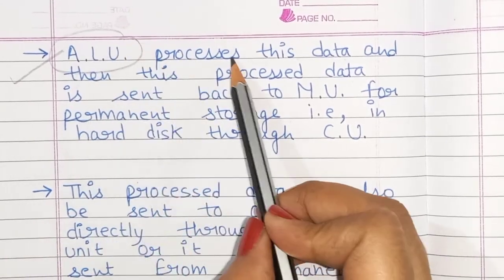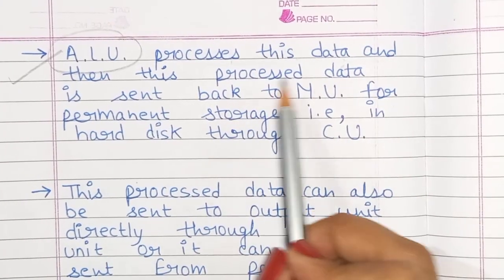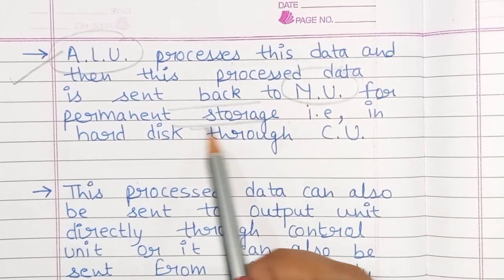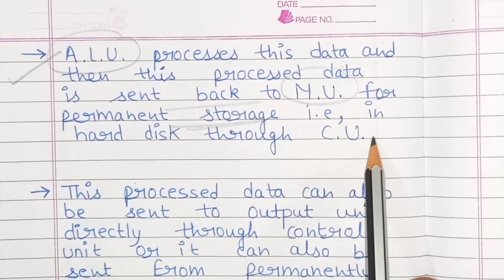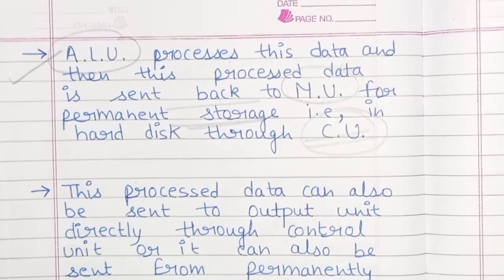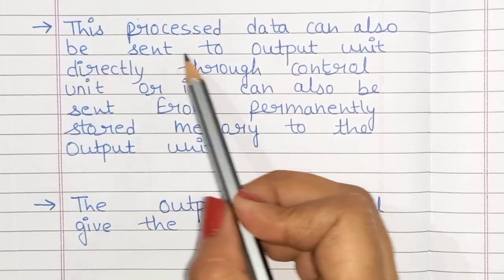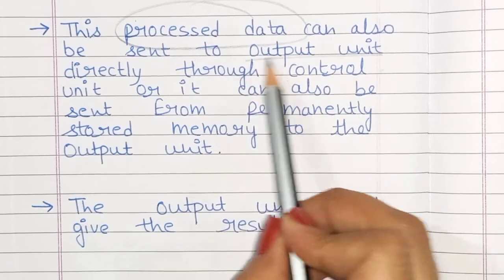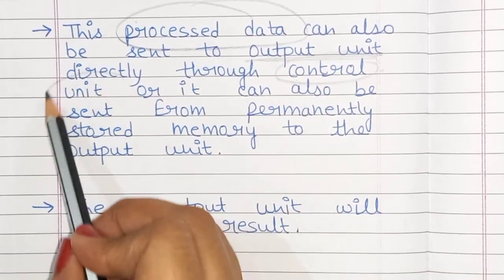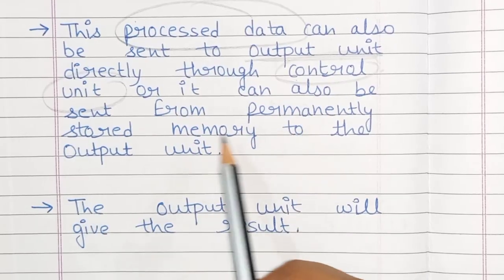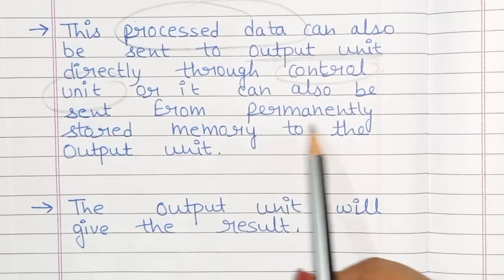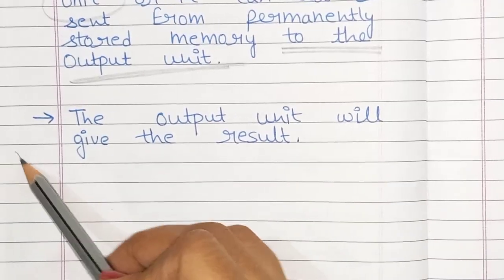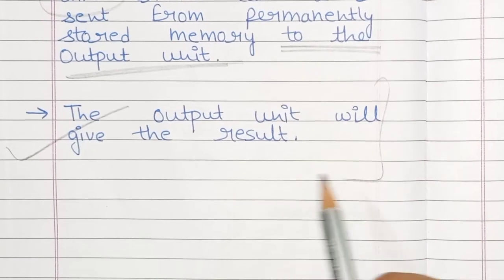The ALU will process this data, and the processed data will be sent back to the memory unit for permanent storage. It will then be sent to the output unit through the control unit. The output unit will give the result.